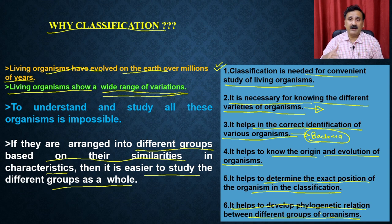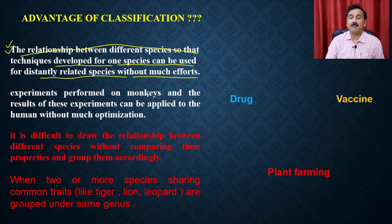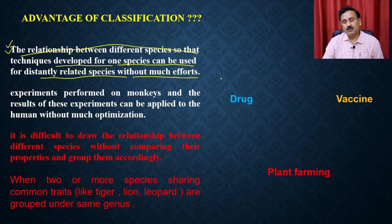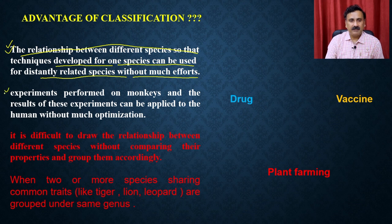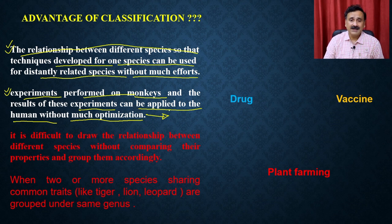What is the advantage of classification? It gives you the relationship between different species, so that techniques developed for one species can be used for distantly related species without much effort. For example, a technique developed for buffalo can be used for cow and goat as well. Similarly, experiments performed on monkeys can be applied to humans, because humans evolved from monkeys — and that is what researchers do with drug molecules and vaccine candidates.